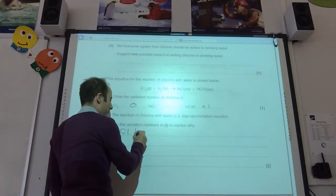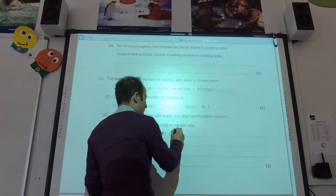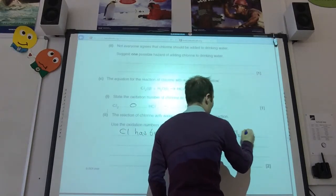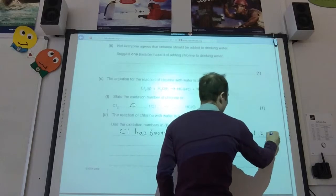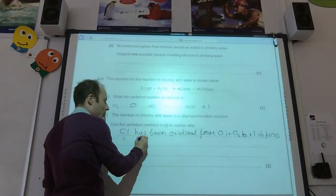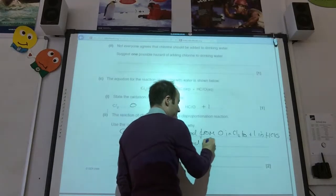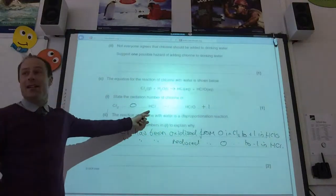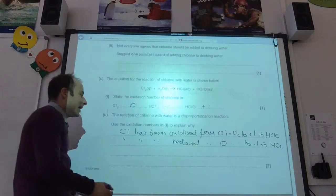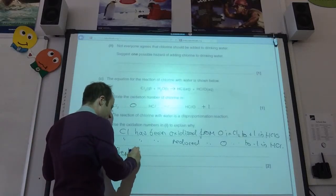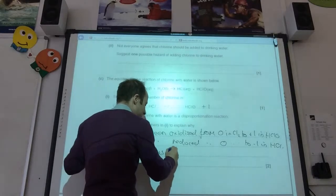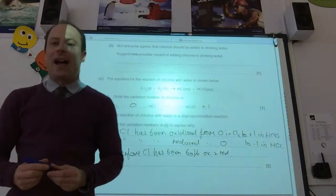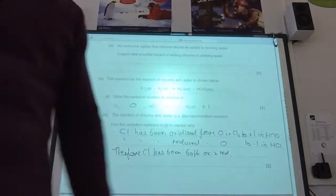So, Cl has been oxidized from zero in Cl2 to plus one in HClO. And then you'll see that chlorine has been reduced from zero in Cl2 to minus one in HCl. I know you've already stated them up there, but do a double whammy. And therefore, therefore, chlorine has been both oxidized and reduced. Just to spell it out. You know, it is two marks. So, you might as well just make sure you get both.